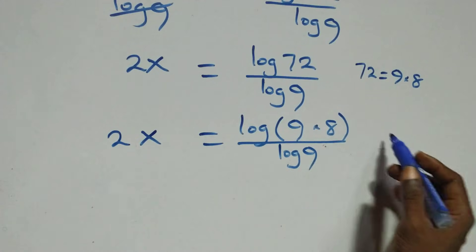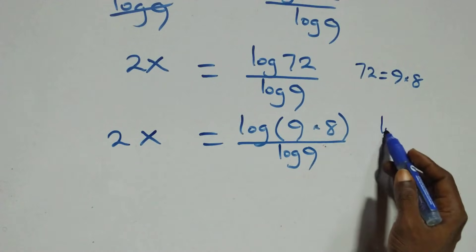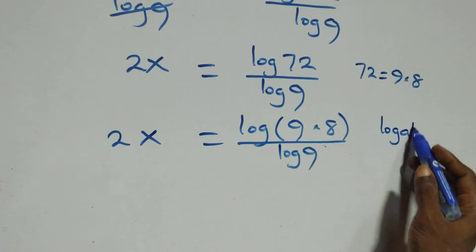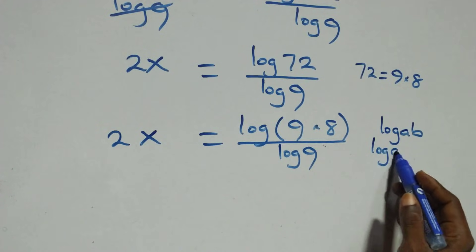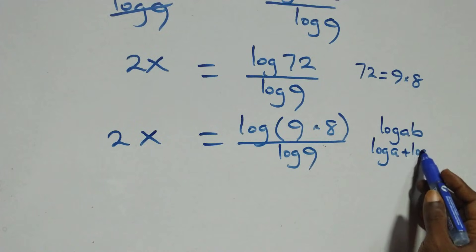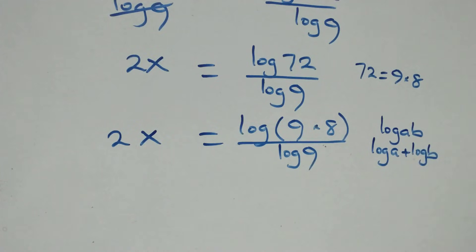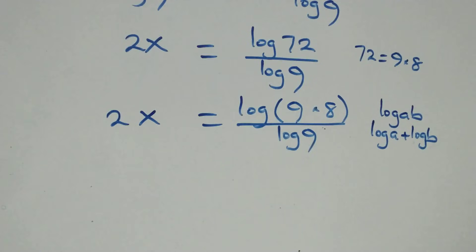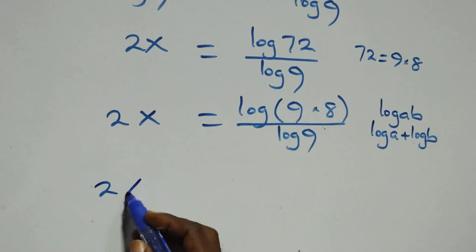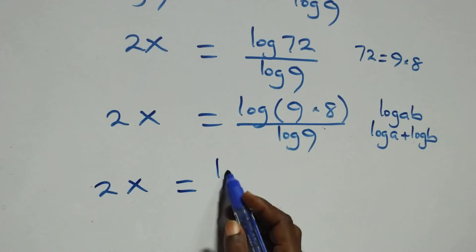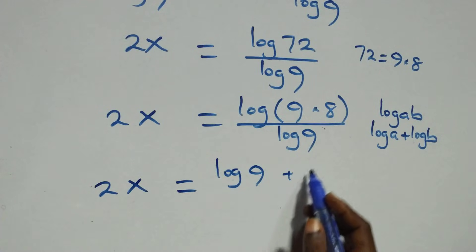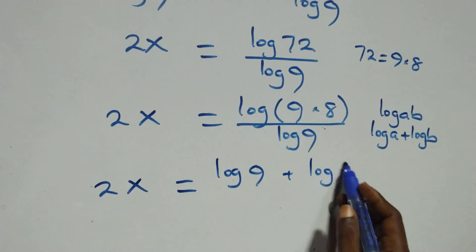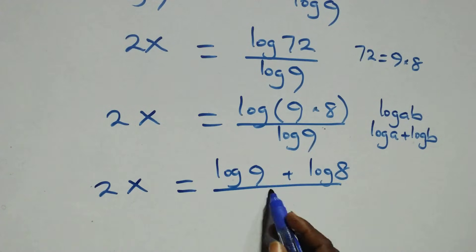This follows the law of logarithm. We have log(a times b), which is the same as log a plus log b. So all we have becomes 2x equals to log 9 plus log 8, all over log 9.